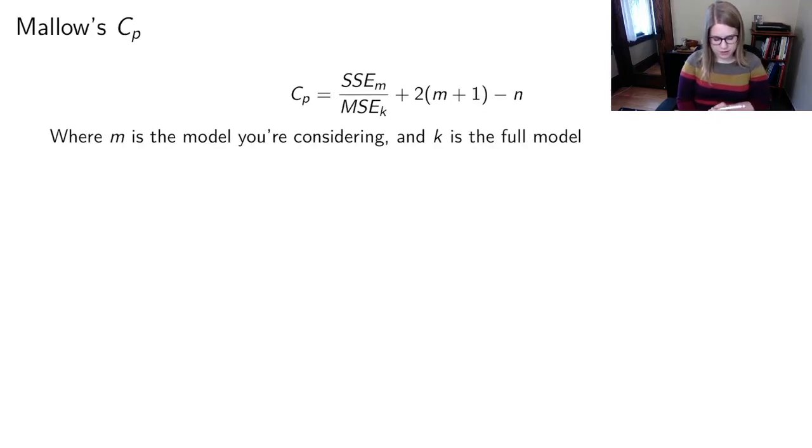Then the method that the book uses is called Mallow's CP and this is the formula for Mallow's CP. You don't actually need to know this formula, but basically you're looking at the sum of the squared errors for the model you're considering, or you could think about that as the RSS for the model you're considering, divided by the mean squared error for the full model, like with all of the variables contained. And then you're going to look at the number of terms in the model you're considering and you're going to subtract off the size of the sample.